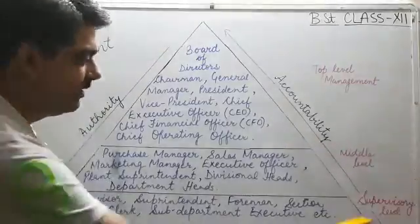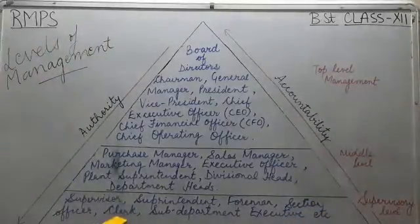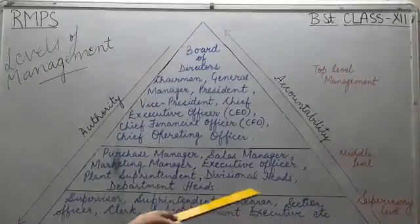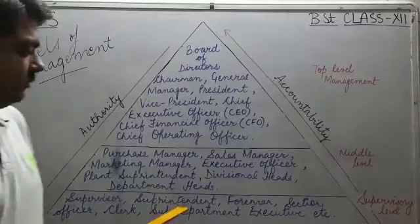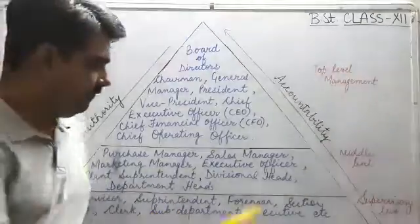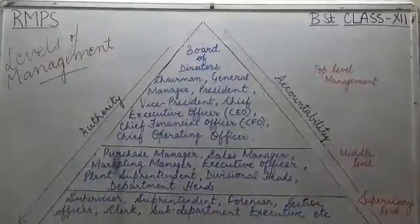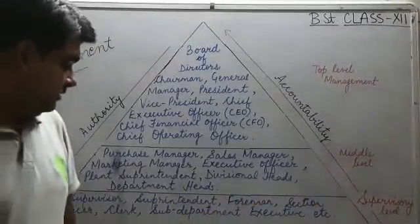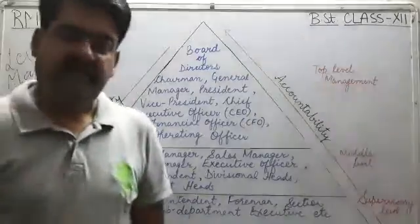Now coming to supervisory level, a few designations of supervisory level are supervisor, superintendent, foreman, section officer, clerk, sub department executive, etc.